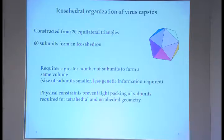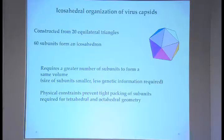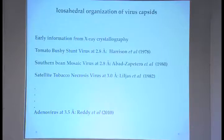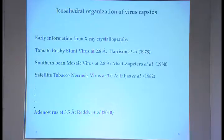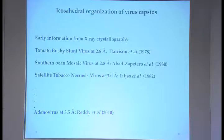Early information about virus capsid organization — how the proteins are organized, the structural constraints, whether quasi-symmetry is preserved — initially came from X-ray crystallography. Three structures were published around 1980: tomato bushy stunt virus at 2.8 Å, southern bean mosaic virus at 2.8 Å, and satellite tobacco necrosis virus at 3 Å. These were stable, small plant viruses, easier to produce in large amounts and to get stable crystals.